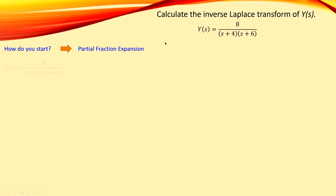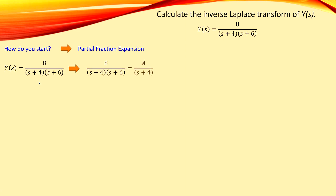So how do you carry out the partial fraction expansion? We have the system here. What you actually do is separate your system, which is given in a fraction, into two simpler fractions. This will be transformed into A divided by (s + 4), plus B divided by (s + 6). If you have several other factors, such as (s + 17) and (s + 20), you just carry on adding terms until you are done.